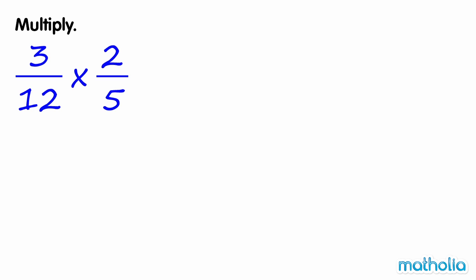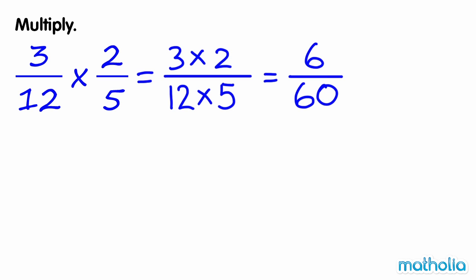Multiply. Three-twelfths times two-fifths is equal to three times two over twelve times five, which equals six over sixty. Dividing the numerator and the denominator by six gives one over ten. So three-twelfths times two-fifths equals one-tenth.